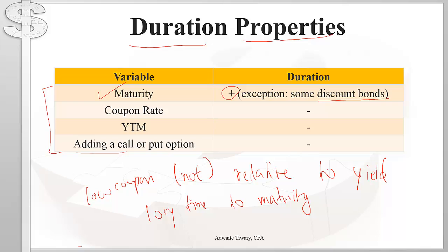Coupon rate is negatively related to duration. The reason is simple: when we receive higher coupon payments earlier in the period, that decreases duration.